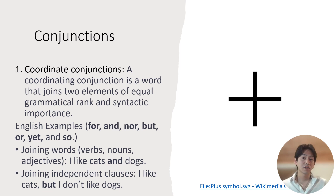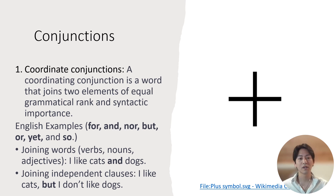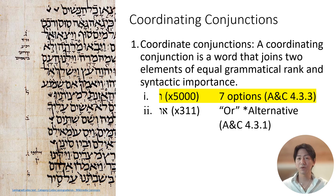You can also use coordinating conjunctions to join two independent clauses. Independent clauses are clauses that can stand on their own, usually with a subject, verb, and object. For example, 'I like cats, but I don't like dogs.' Here the coordinating conjunction 'but' is combining two independent clauses — 'I like cats' and 'I don't like dogs' — each of which has a clear subject, verb, and object.